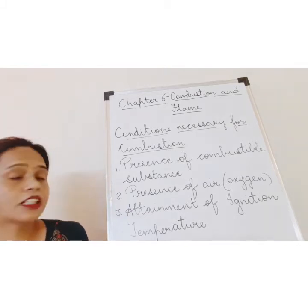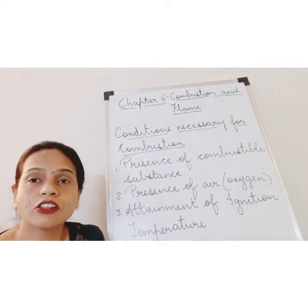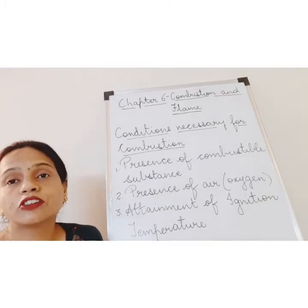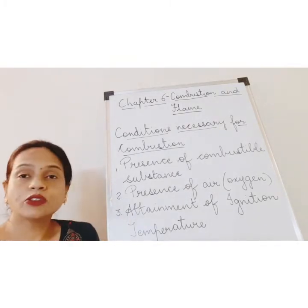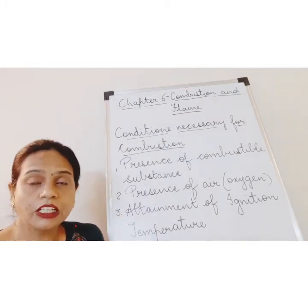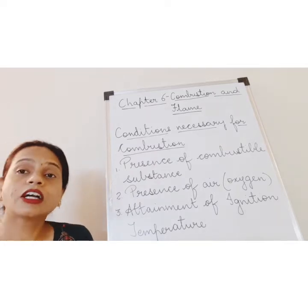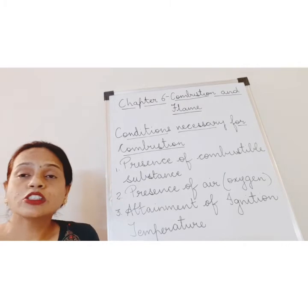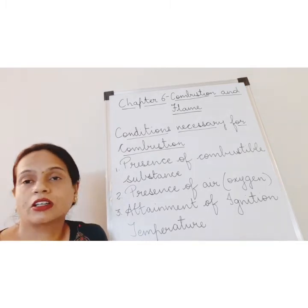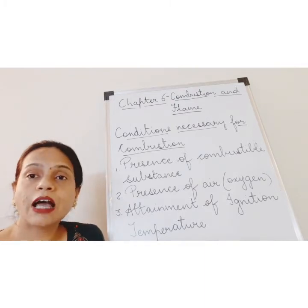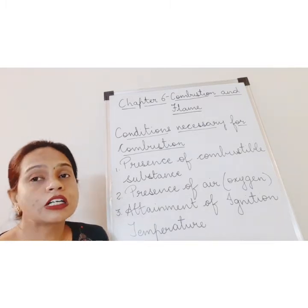Now we come to the conditions necessary for combustion. There are three conditions. The first is the presence of a combustible substance — a substance that can burn. The second is the presence of oxygen, and enough of it, because insufficient oxygen causes incomplete combustion and produces carbon monoxide. In the absence of oxygen, there will be no combustion taking place.